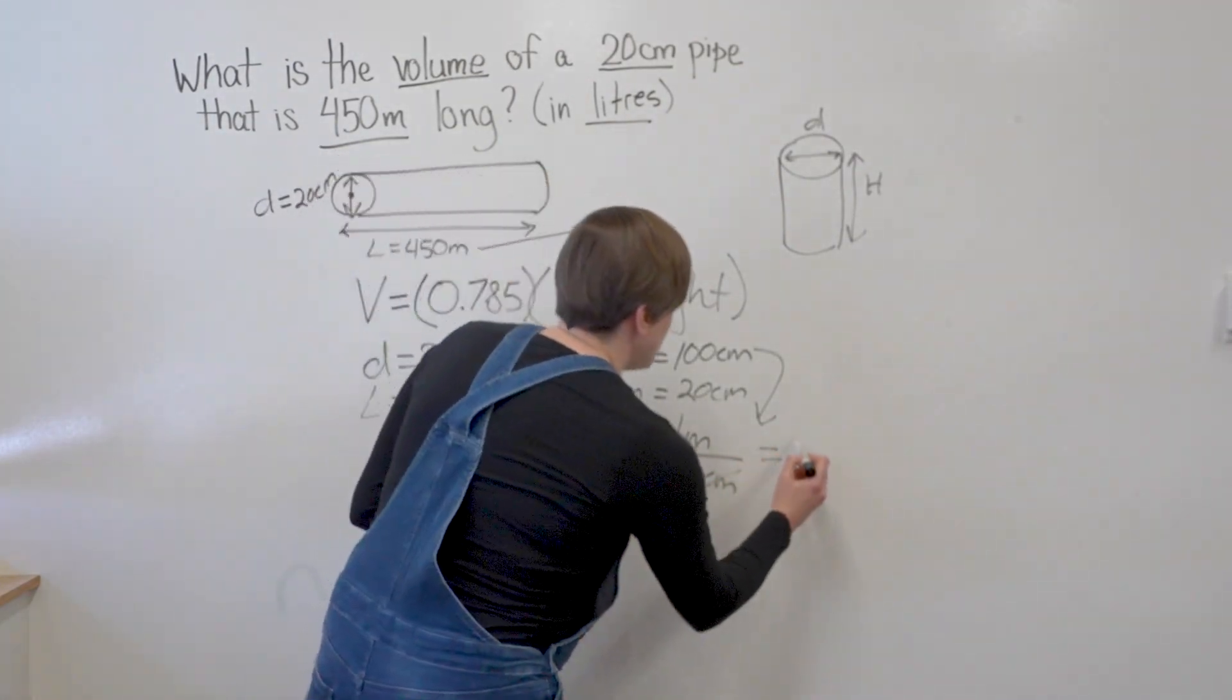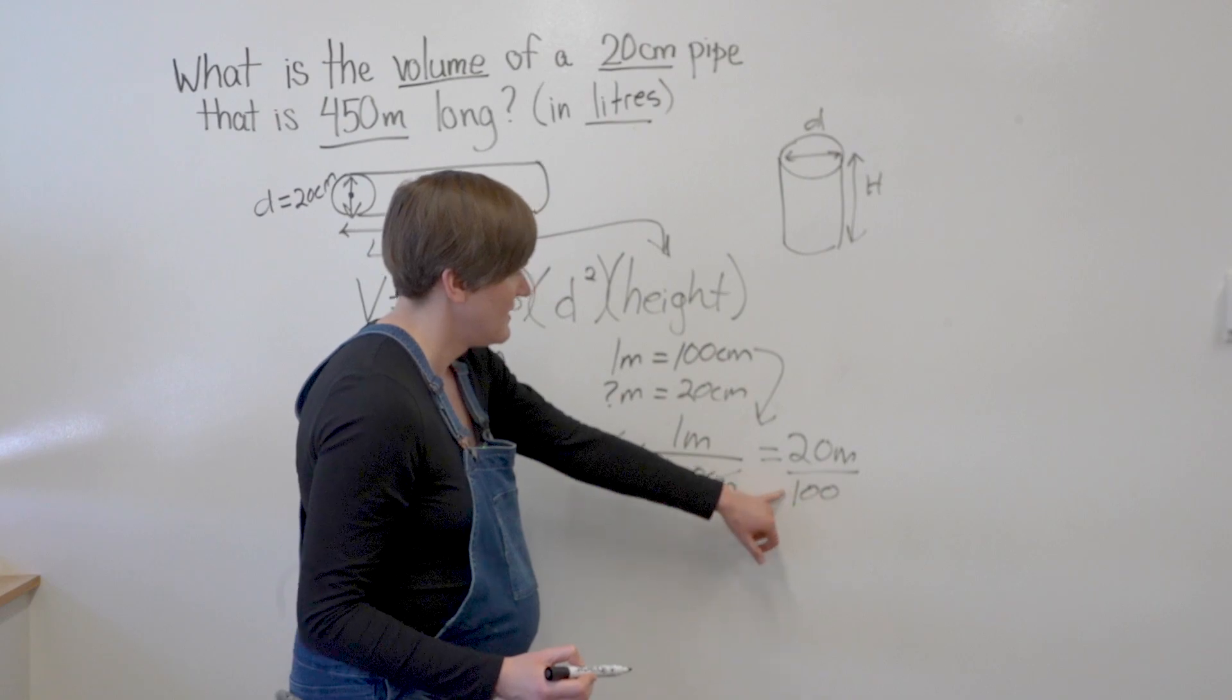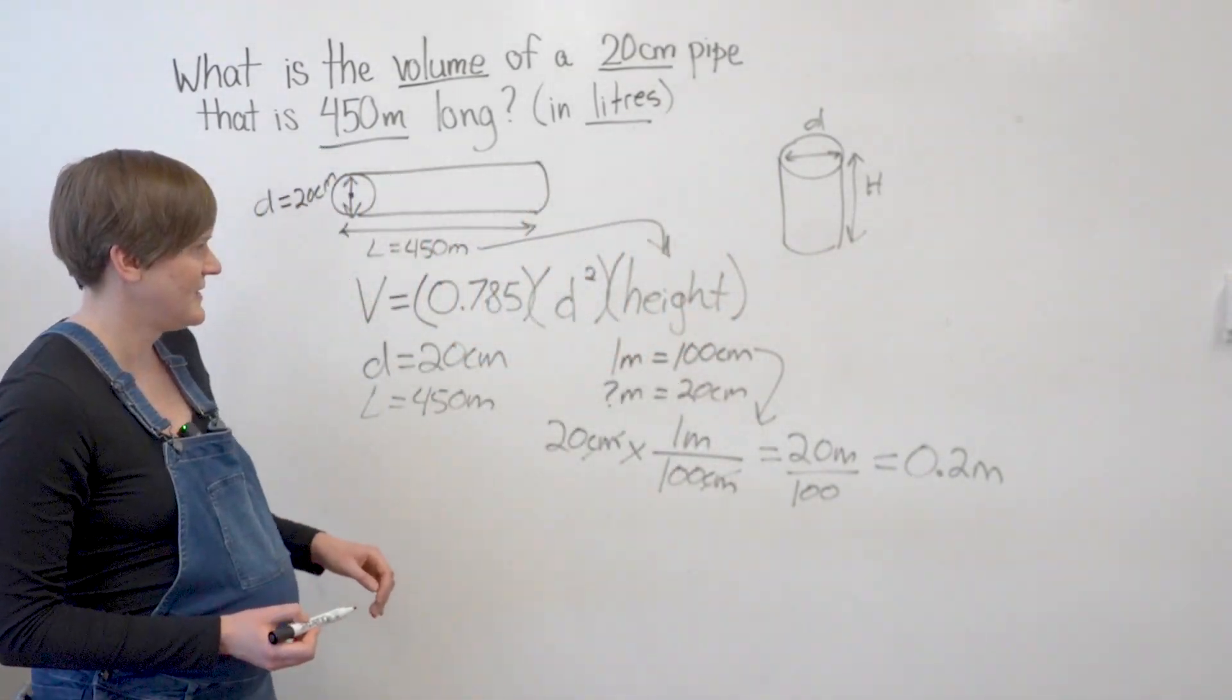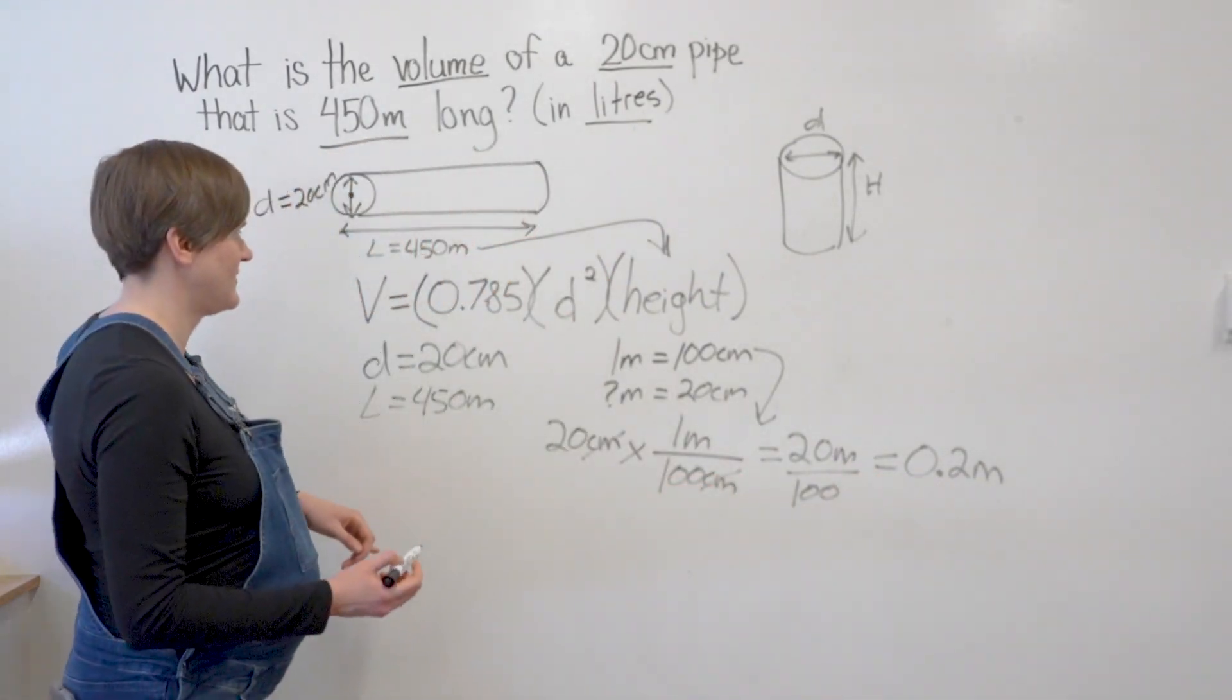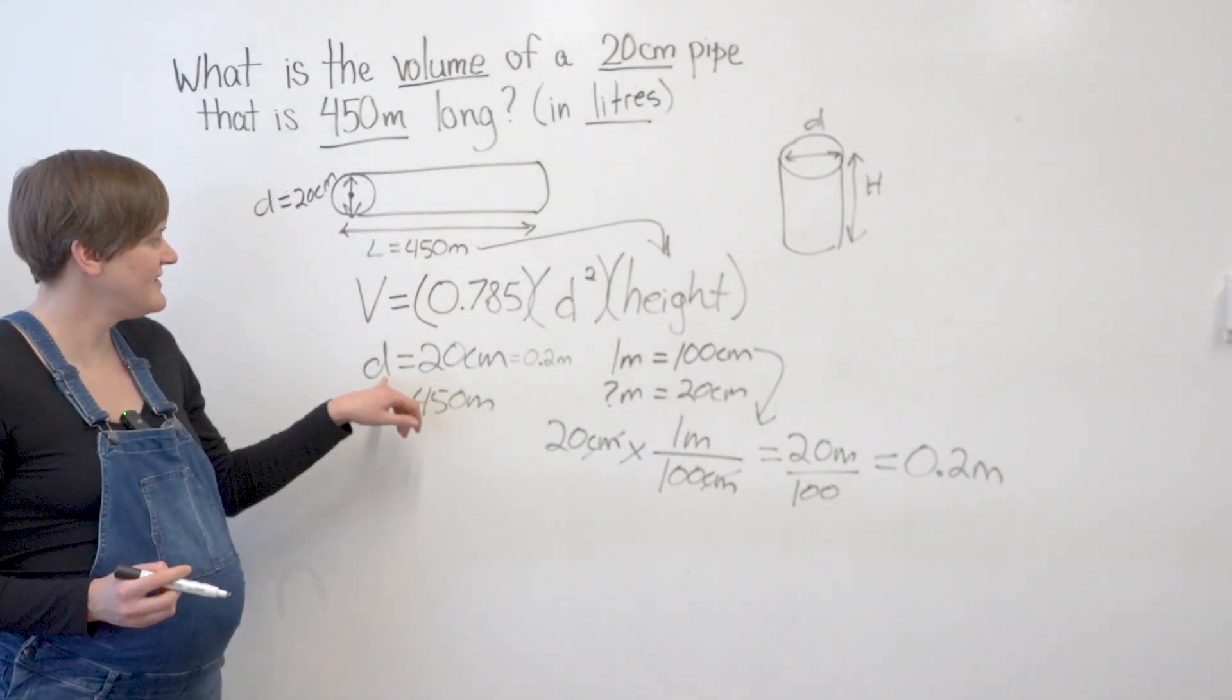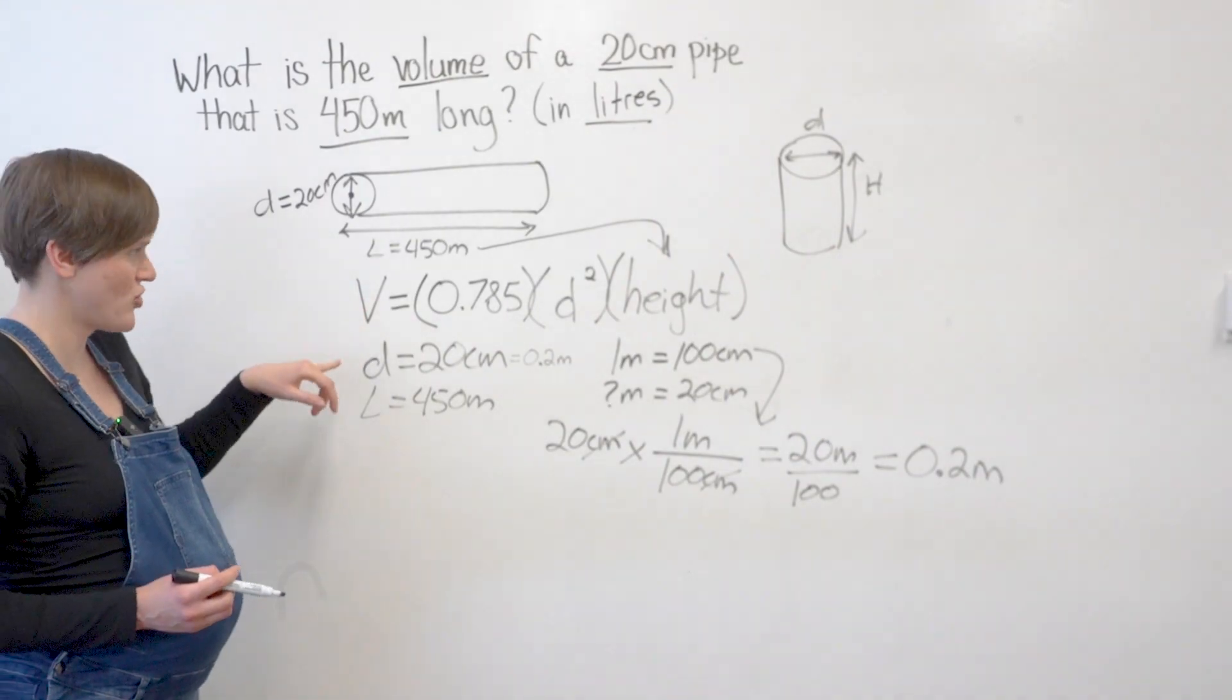So 20 times 1. And you still have the 100 on the bottom. So if I go 20 divided by 100, you get 0.2 meters. So 20 centimeters equals 0.2 meters. So now I have my D diameter in meters, my length, L in meters, so I can go ahead and use my formula.